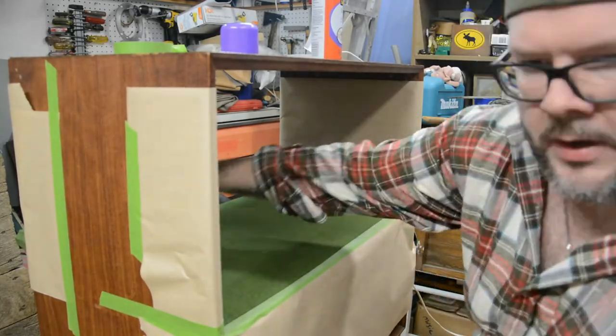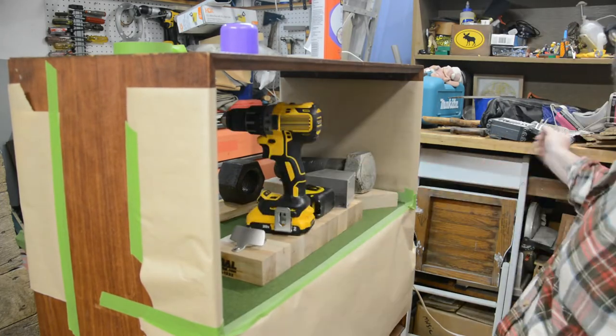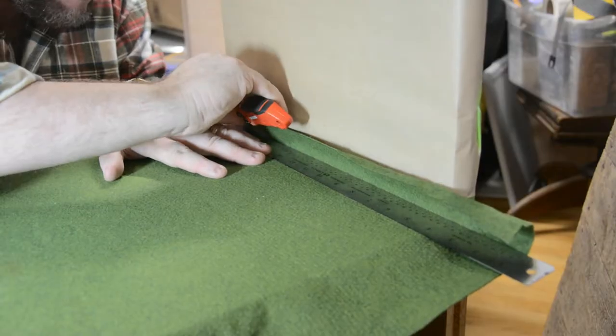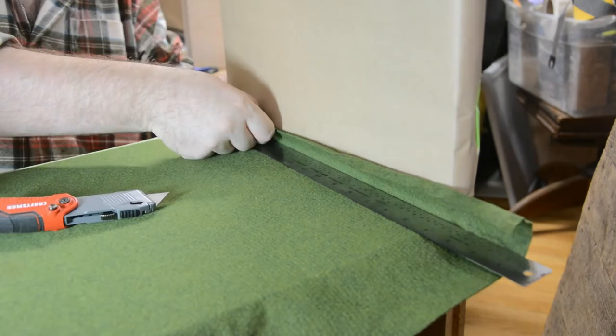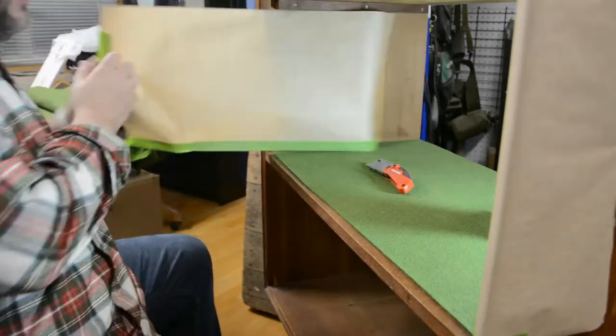I then added some weights just to make sure that the bond between the wood and the felt was really strong. Once I gave that some time and let it dry, I cut off the excess felt on each side, found out that this worked really efficiently, and repeated it on the bottom shelf.